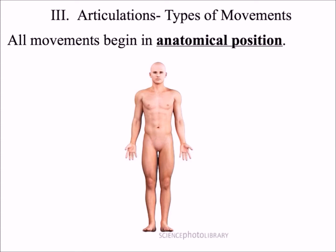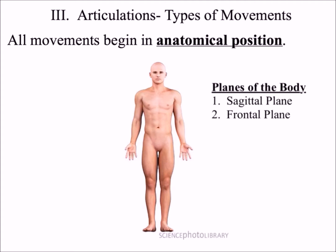When describing movements, we talk about what planes these movements are parallel to. There are three planes in the human body. One plane is called the sagittal plane, another plane is called the frontal plane, and the third plane is called the transverse plane.